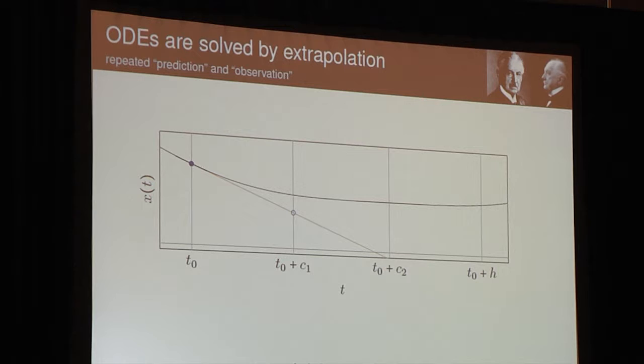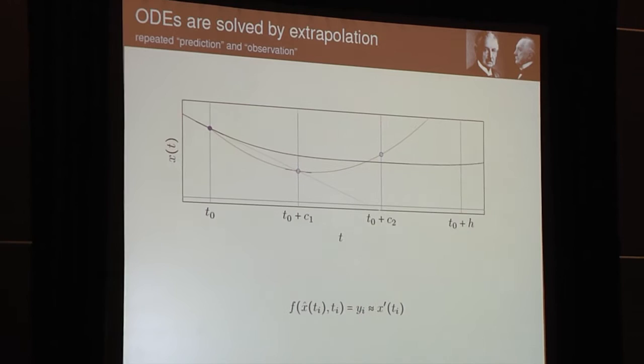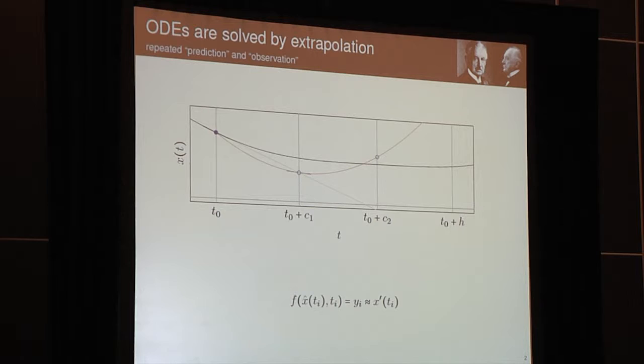So what they do is, or what the method does, is it uses the initial value to plug it into the differential equation. This gives you an observation of the gradient of the curve of the true solution at this point. And then you use this information that you have, you use the initial value and the gradient, to predict the true solution to some future time point. Let's say C1 with the offset of the start. Now, you can use your estimate, x hat, to plug that into the differential equation again. This gives you another data point, another observation of the gradient at this point. And then you use this another data point to update your current estimate of what the true solution is. You repeat this. You predict to some other future point, C2. You plug your current estimate back into the differential equation. You collect another data point, another gradient observation. And you do this on this block until you are sufficiently satisfied with your solution.